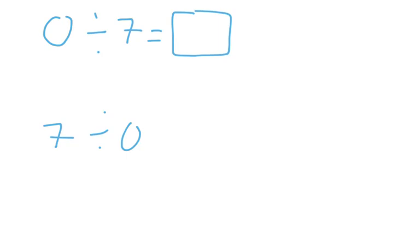If I want to know what 0 divided by 7 is, I think about, okay, what would be the missing factor? What do I multiply by the divisor to get the dividend? What goes in that box?